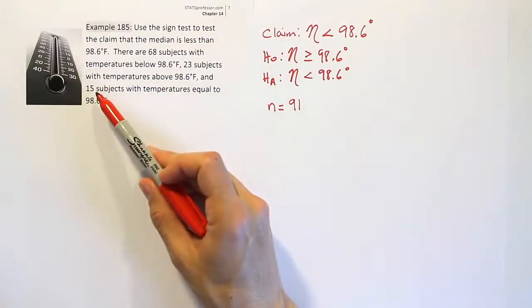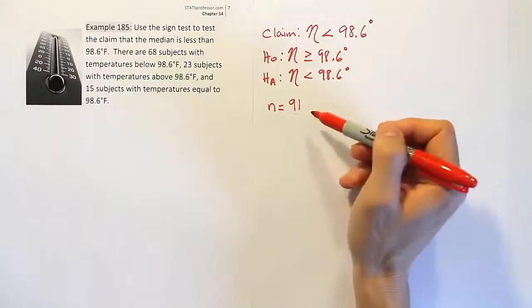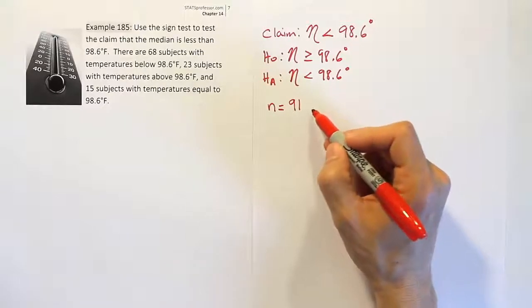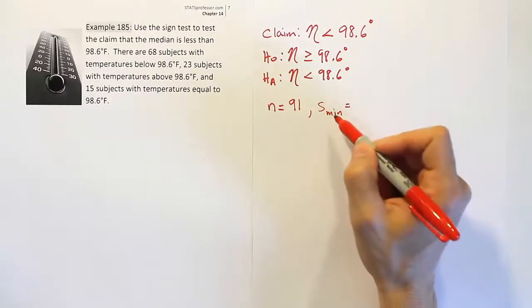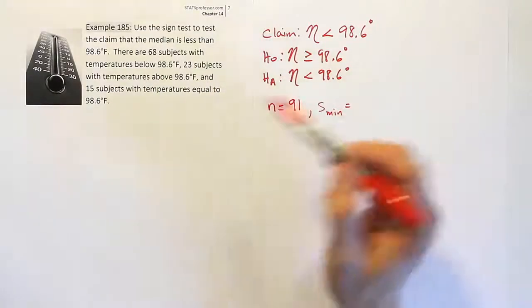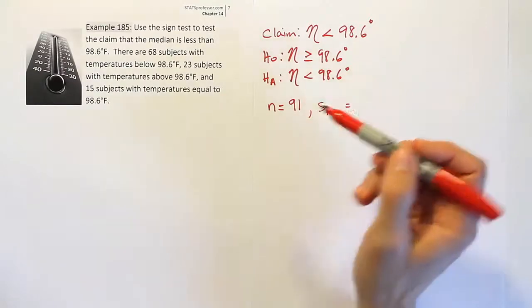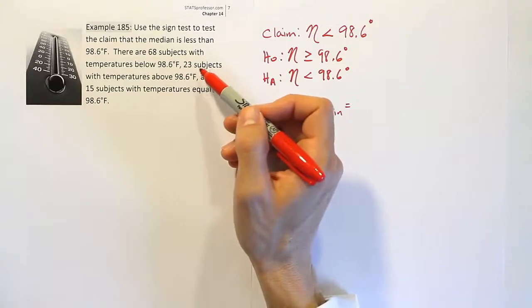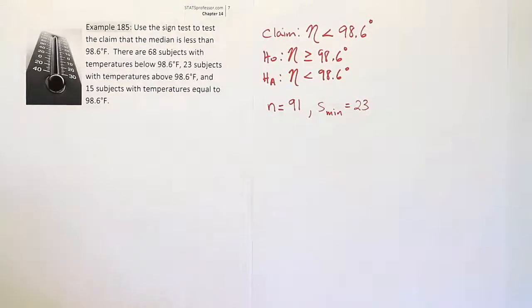We throw out ties. So we're going to look at n being 91. Next, you're going to calculate something called S minimum. S minimum is, of the remaining two categories that are left after discarding the ties, the one that has the smallest number of subjects. There are 68 subjects with temperatures below 98.6, and 23 subjects with temperatures above that. So we're going to use 23 as S minimum.